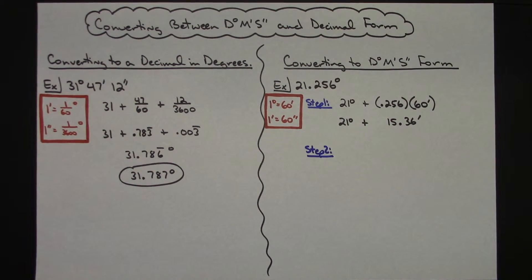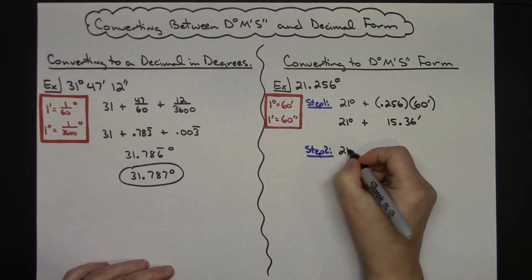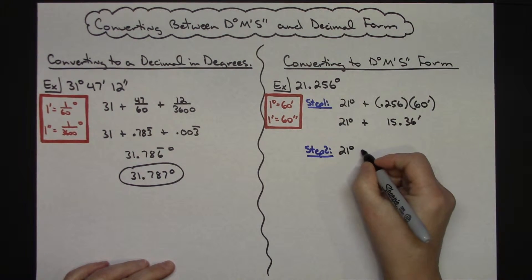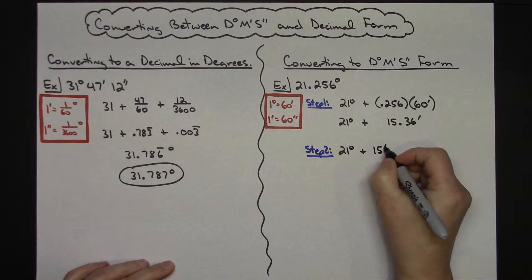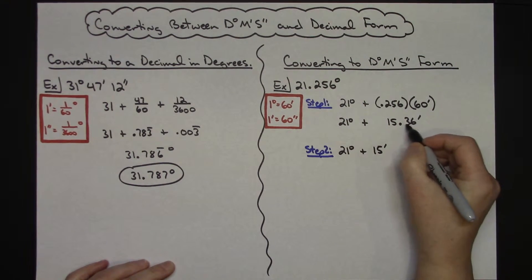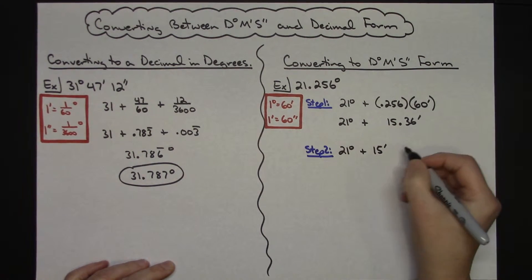At this point now I know I have 21 degrees and I have 15 minutes. Now I need to find out what fractional part this is for my seconds.